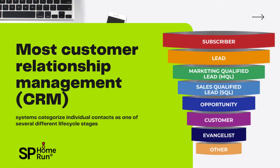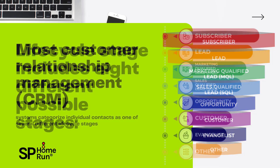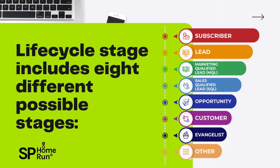Most CRM systems categorize individual contacts as one of several lifecycle stages. The lifecycle stage includes eight possible stages or contact properties: one, subscriber; two, lead; three, marketing qualified lead (MQL); four, sales qualified lead (SQL), also sometimes known as SAL, sales accepted lead; five, opportunity; six, customer; seven, evangelist; eight, other.